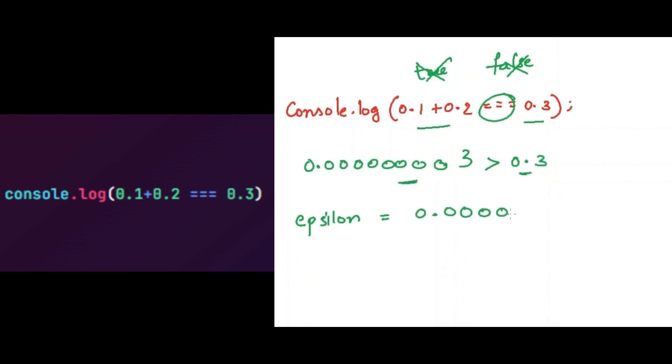Now we need to take the absolute addition value of this and we need to compare the value. So if the value is more than the epsilon value, then it is false—these both are not equal. If it is less than the epsilon value, then these both are equal.